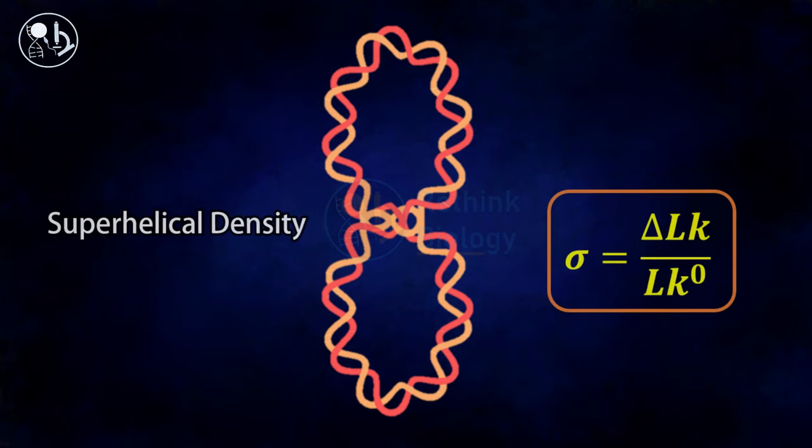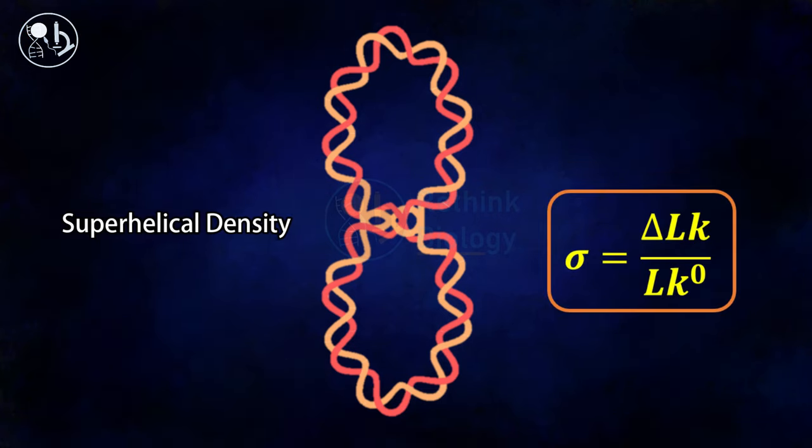The super helical density is measured by the ratio of delta Lk and Lk0. It is expressed by the symbol sigma.